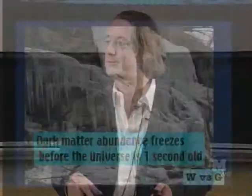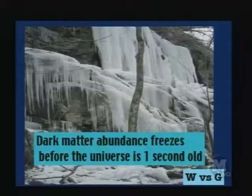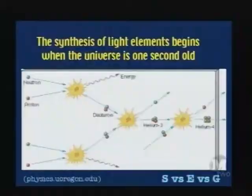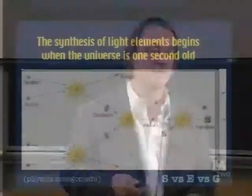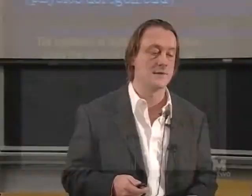Shortly after the dark matter particles freeze out, the protons and neutrons finally start to do something. In the beginning there are no elements — only protons and neutrons; before that, only quarks. Protons and neutrons get together through the action of the strong force, which fights against the electric force that makes the particles repel, and gravity which is making the universe expand. The strong force has to win its battle against the electric force and gravity in order to make any elements.